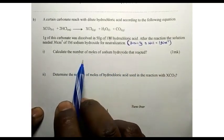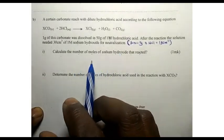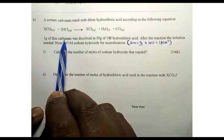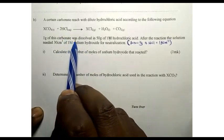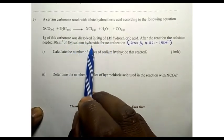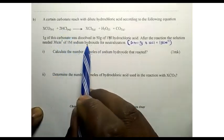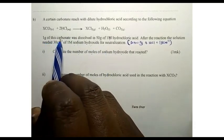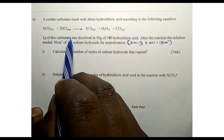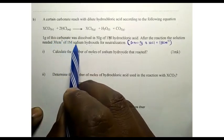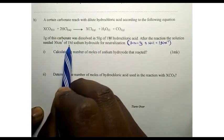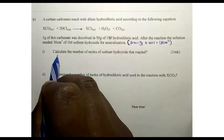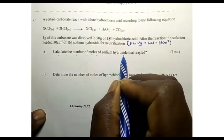Before we go there, it is important to understand what kind of reaction this is. The HCl is reacting with the carbonate first, and the remaining HCl is going to react with the sodium hydroxide — this means the acid was in excess. Therefore, after reacting with 1 gram of the carbonate, the remaining HCl reacts with 30 cm³ of 1 molar sodium hydroxide.